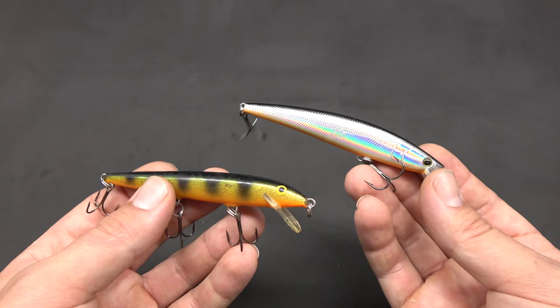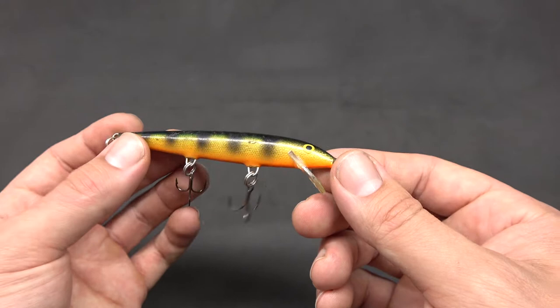This rig can be fished with a number of different baits. Most commonly is probably these large crankbaits. You're going to want to use the floating type with a small bill. You don't want this bait dragging into the bottom. You want it to stay suspended off the bottom.